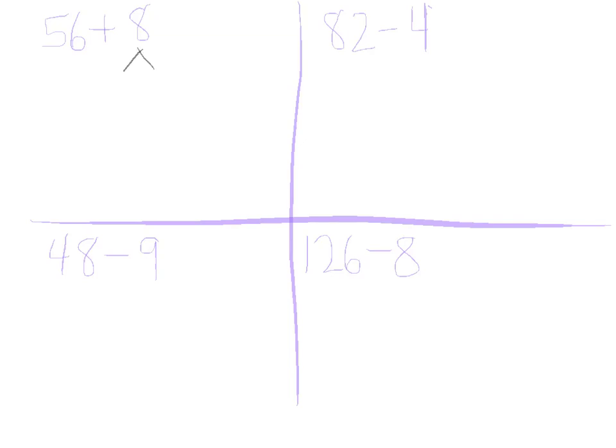So, 56 and 4 more would make 60, so I need to break this 8 apart into 4 and 4 more. So, 56 plus 4 will give me 60. Then I just need to take the 60 and add the 4 to it, and that will give me a sum of 64.